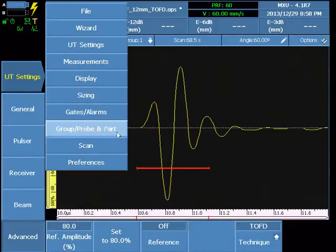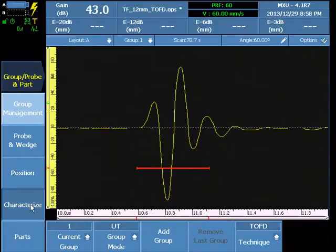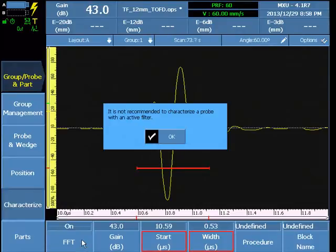Go to the probe part menu and select probe characterize and turn on the FFT function.